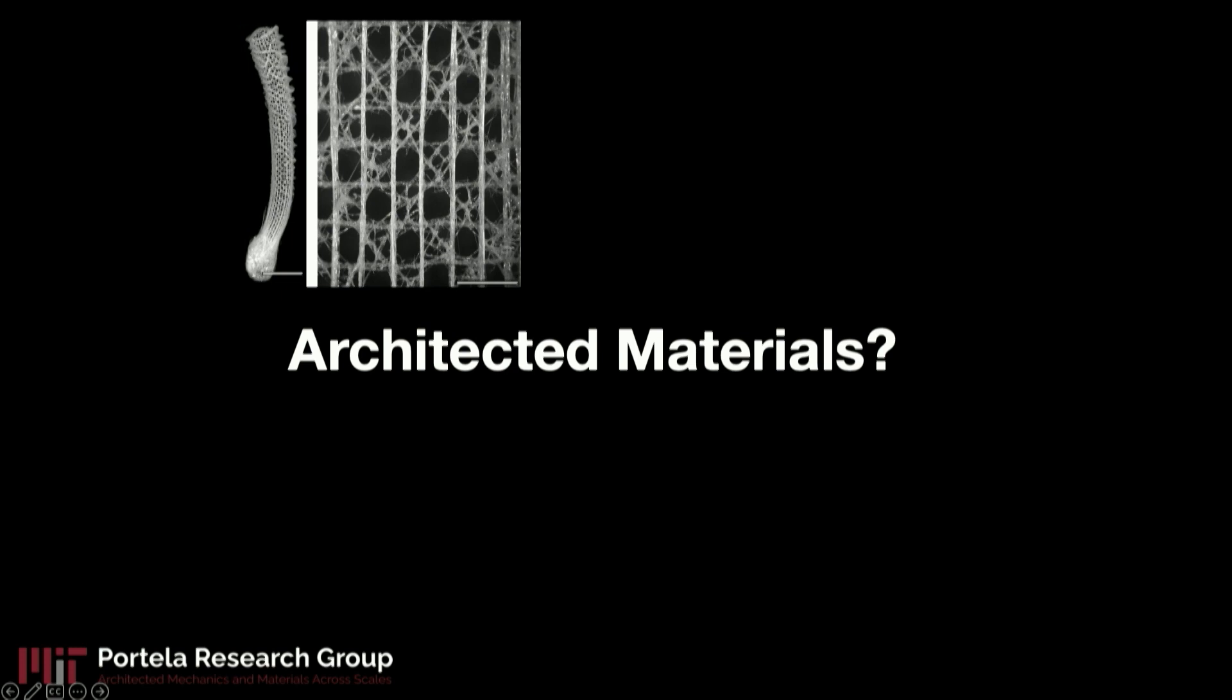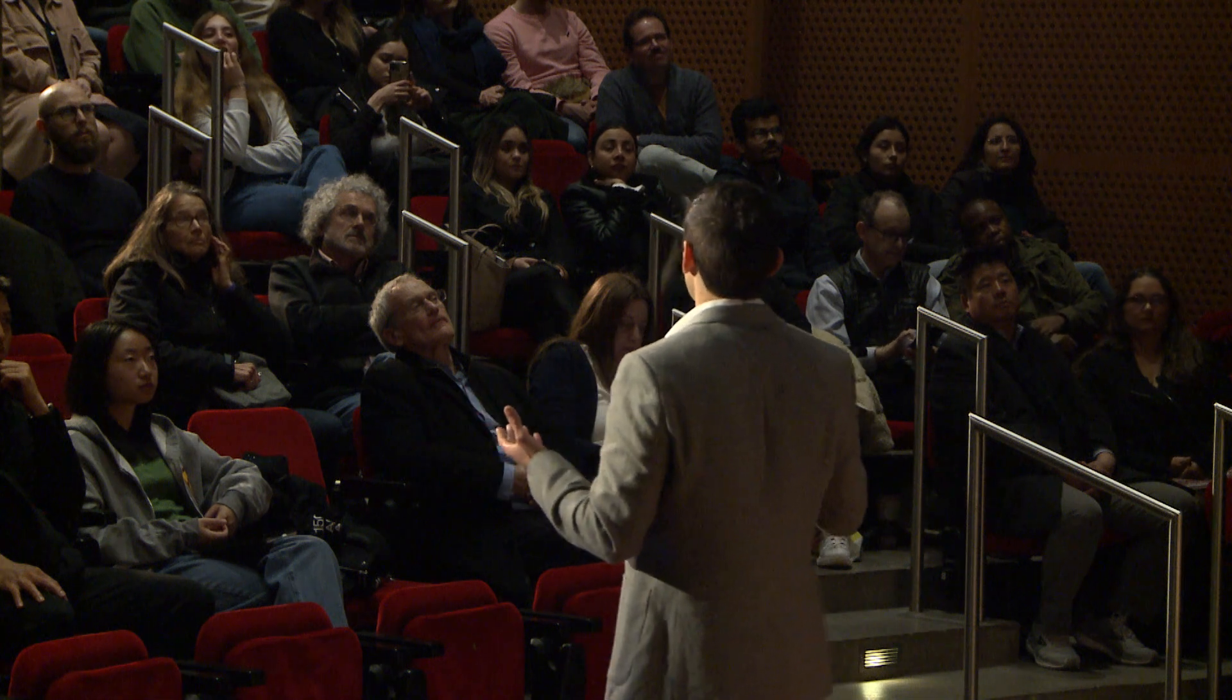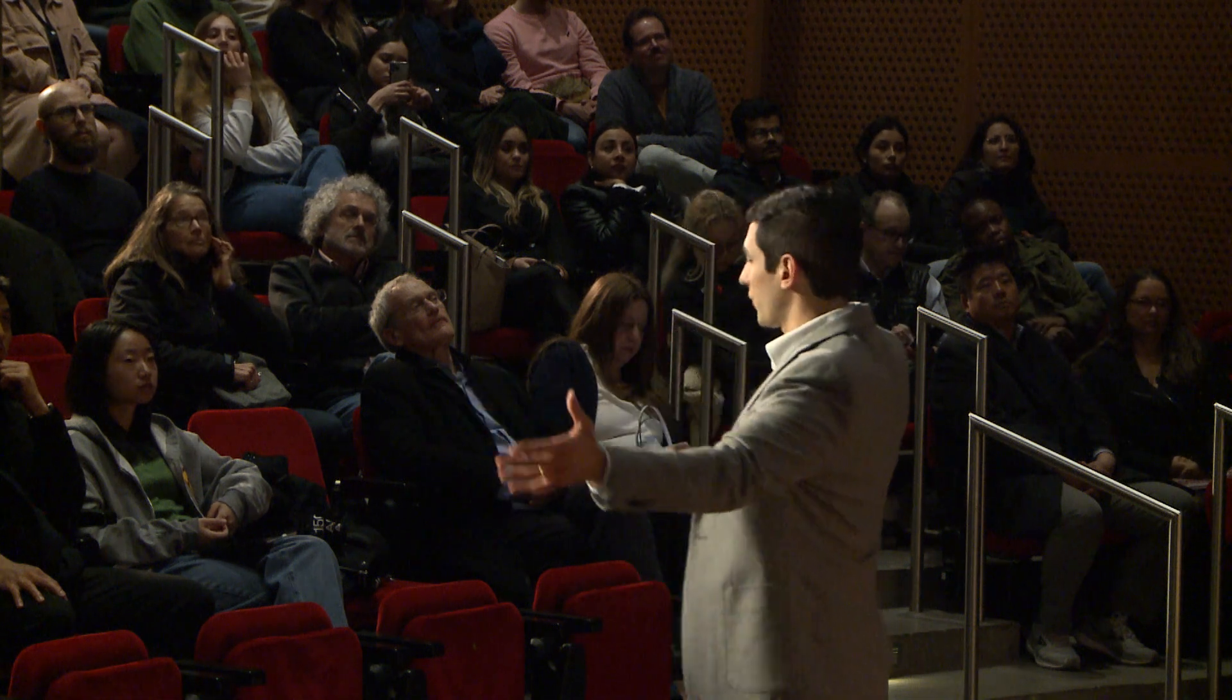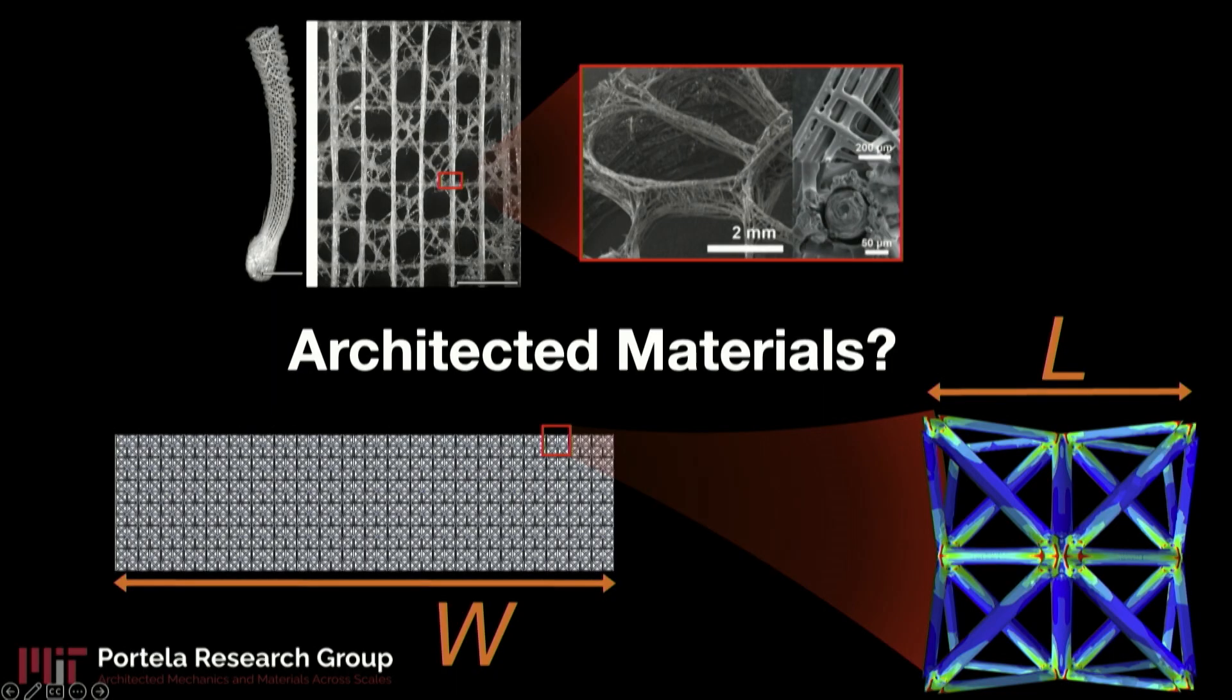This example of sea sponges which are an architected material except they are hierarchical. What I mean by hierarchical is that as you start zooming in at different length scales, you start picking out features and structural features that each serve a purpose and make these sponges quite robust. So we're trying to leverage that knowledge and try to make architected materials in our lab. So we want them to have some overall length scale W with some engineered microstructure or nanostructure at a length scale L that is significantly smaller than W.